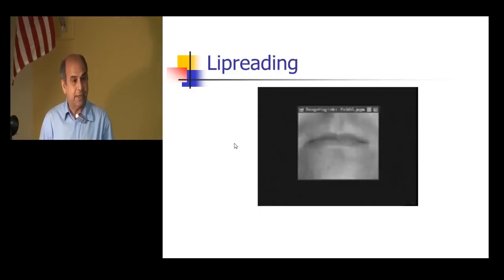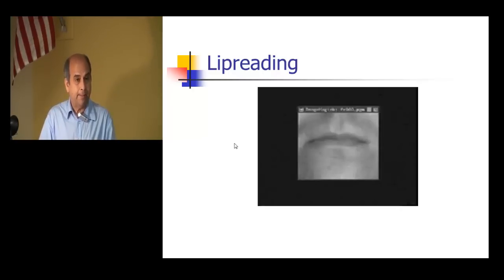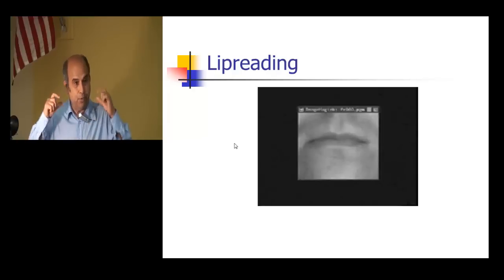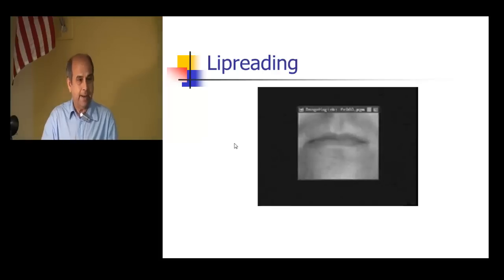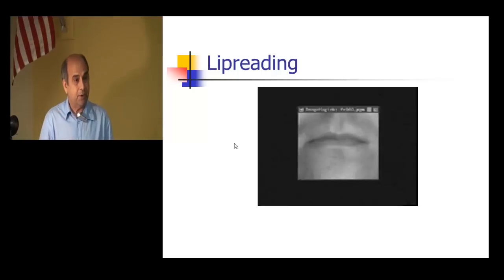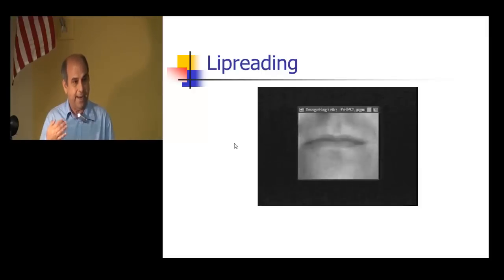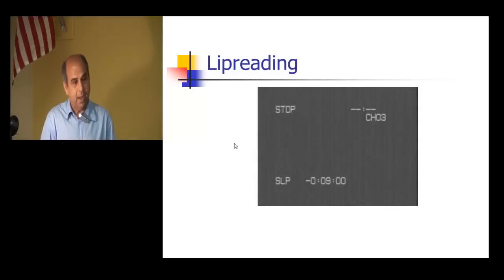Another interesting application is lip reading. You can talk to an iPhone and recognize speech, but in very noisy environments — a noisy bar or an airplane cockpit — the speech recognition system won't work. That's where lip movement is needed, which is what we humans also do: we supplement audio with lip movement, and hearing impaired people understand speech that way. Computer vision can do this. In this video example, the person says English alphabets A, B, C, D and so on, and we have a method that recognizes these letters using how the face is moving.